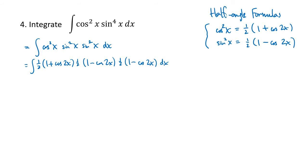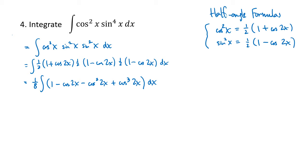Now we multiply that out. There are three factors of one-half, giving a big factor of one-eighth out front. When we multiply everything out, we end up with one minus cosine two x minus cosine squared of two x plus cosine cubed of two x. That's really four separate integrals. The integral of one dx is just one-eighth x. The integral of cosine of two x is a simple u equals two x substitution, giving minus one-sixteenth sine of two x.